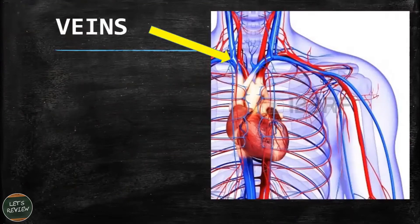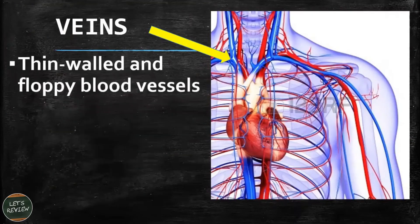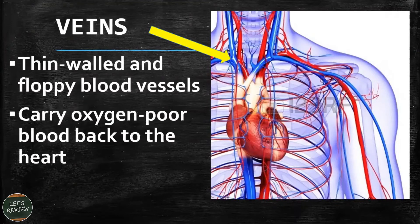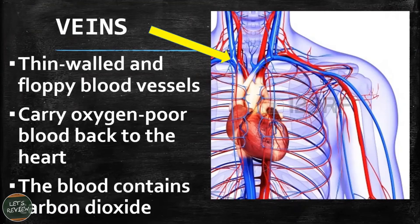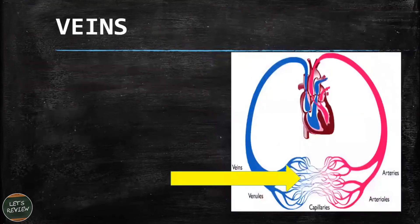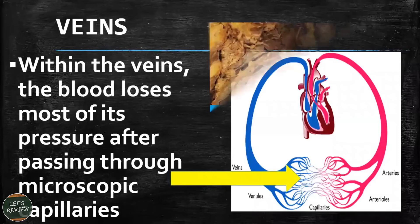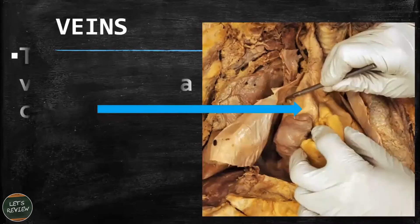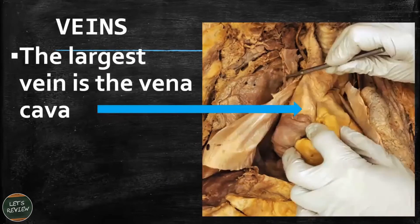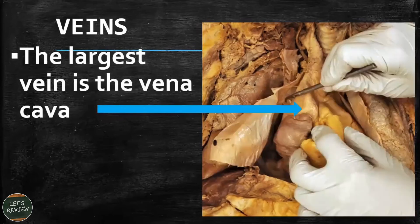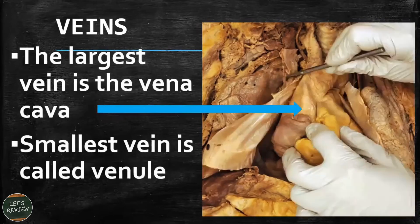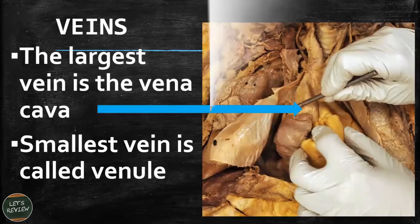The next blood vessel is the vein. A vein is a thin-walled and floppy blood vessel that carries oxygen-poor blood back to the heart, now containing carbon dioxide. Within the veins, the blood loses most of its pressure after passing through the microscopic capillaries. The largest vein is known as the vena cava and the smallest vein is called the venule.